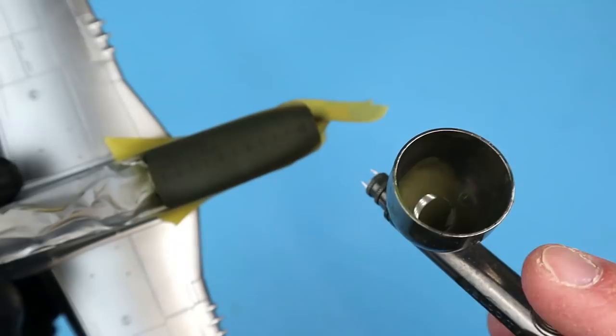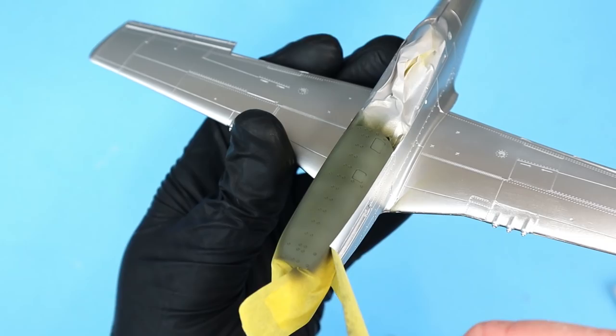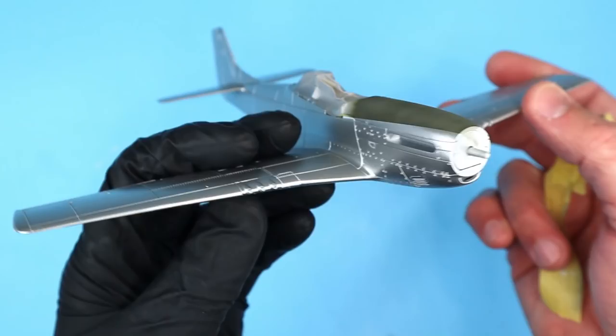To add a little variation to that tone I added a couple drops of Tamiya deck tan and then sprayed a thin layer inside of the various panels. I removed the tape to reveal the sharp line of the anti-glare panel against the natural metal finish.